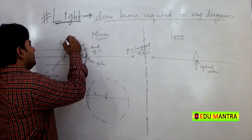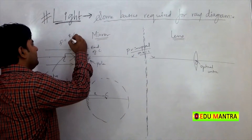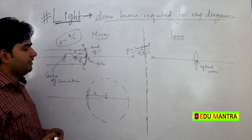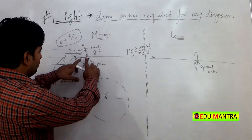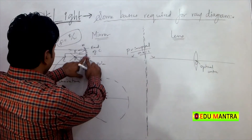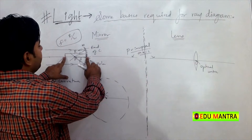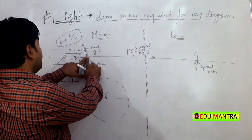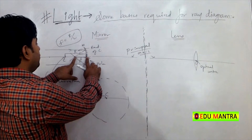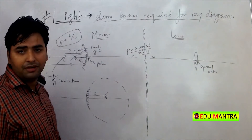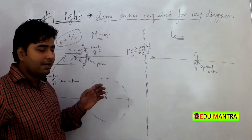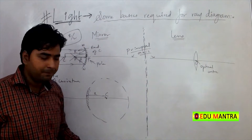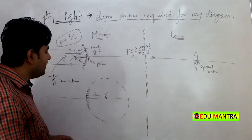Aur yeh focal length radius se kaise related hai — it is half of the radius. Yani ki, agar is pole se 4 cm pe center of curvature hai, to exactly is pole se 2 cm pe principal focus hota hai. Theak hai, kya relation hai — exactly F aur R ka aisa hi relationship hai.